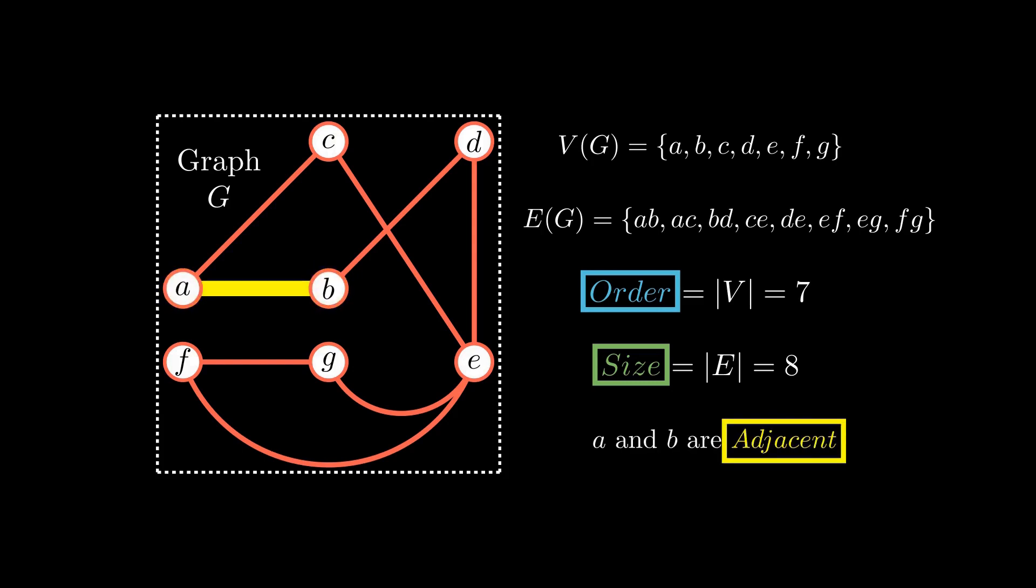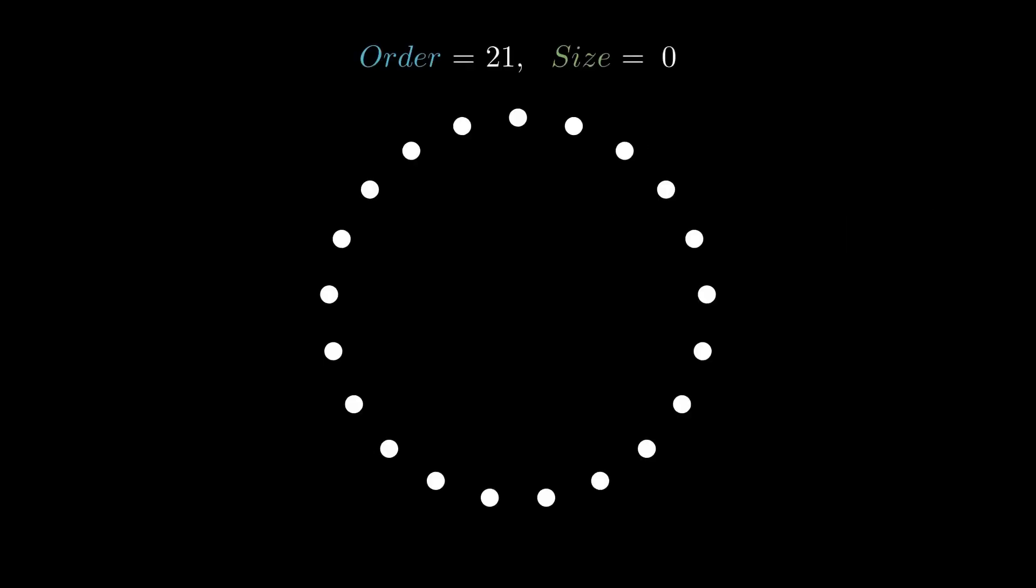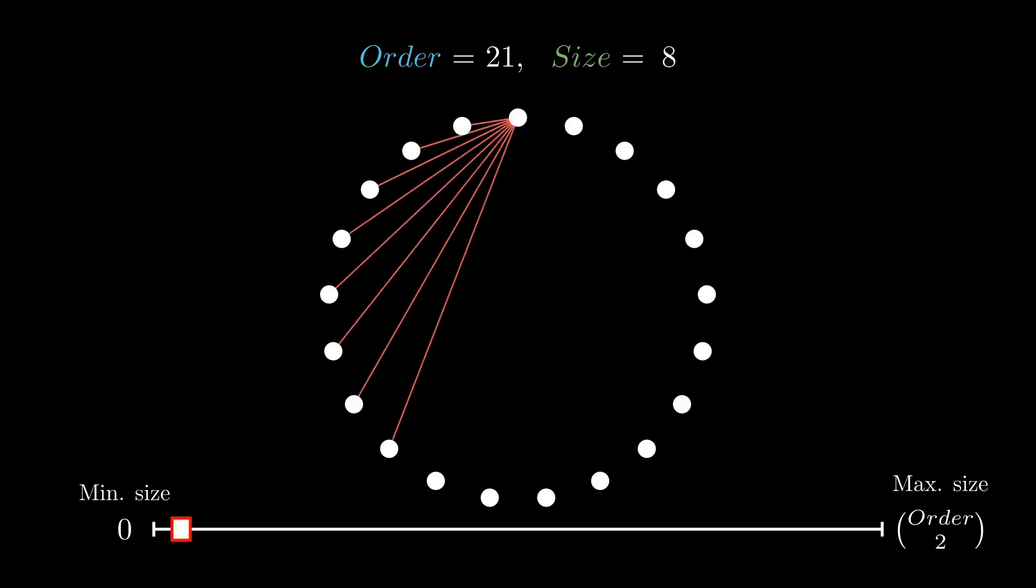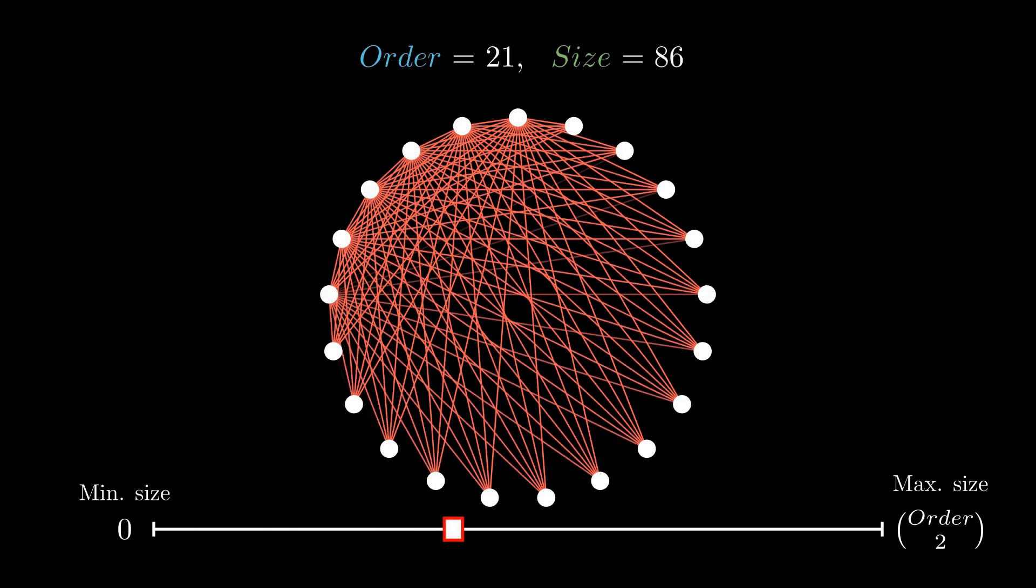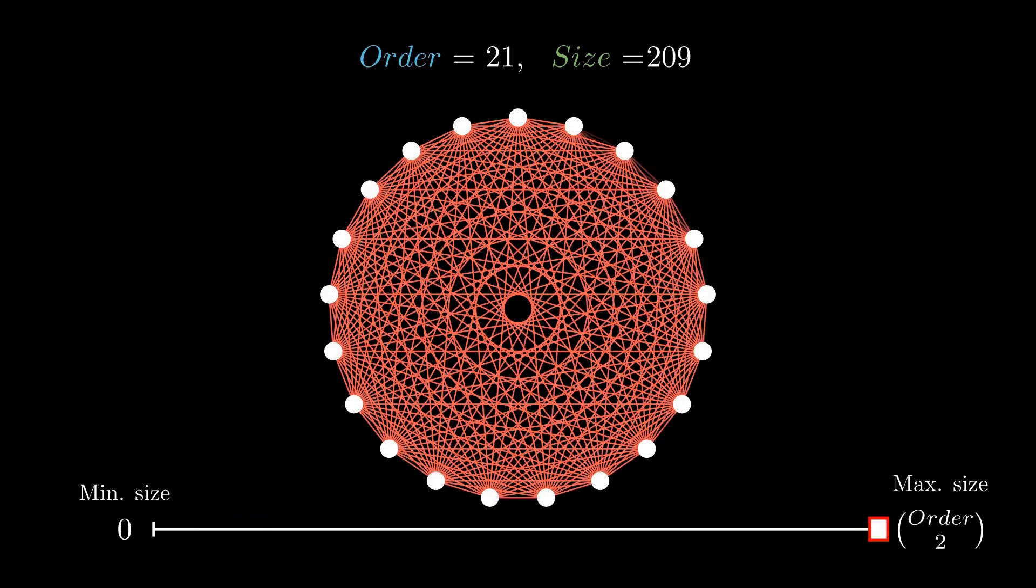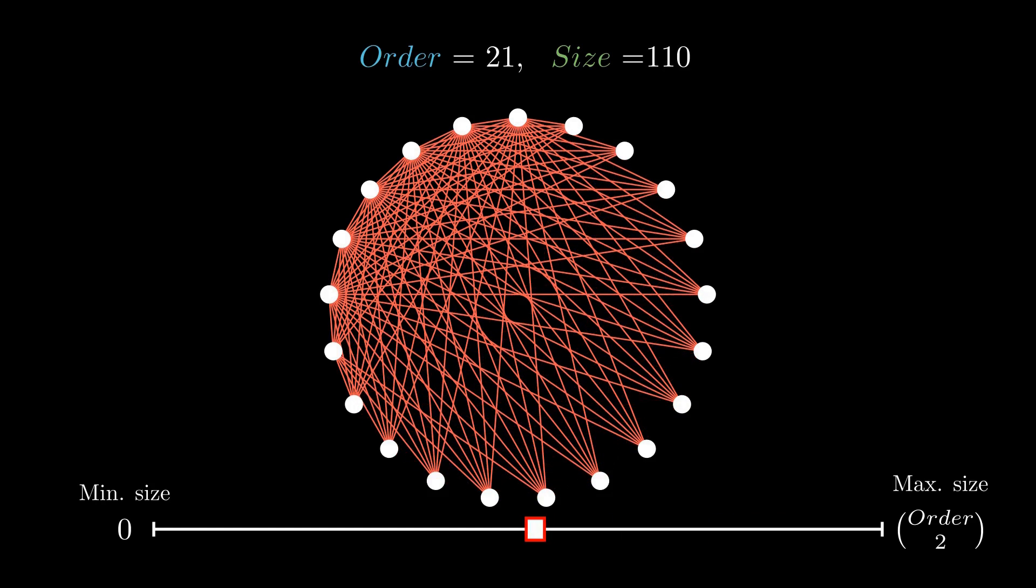Given two vertices, if together they form an edge, then they are said to be adjacent. Given a graph with some order, the minimum size is obviously 0 and the maximum size is obviously the order combination of 2, because the number of possible edges given a set of N vertices is of course the number of ways we can choose 2 vertices.